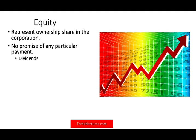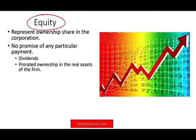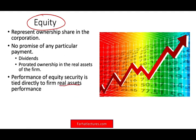Otherwise you don't get anything. You may get a dividend, but it's not guaranteed. You also have the right to vote. In case of liquidation, you have a prorated ownership in the real assets of the firm. If the company goes belly up, whatever is left is sold and distributed proportionately to shareholders — if they have a million dollars left and you own 5%, you may get 5% of that million dollars. Generally speaking, nothing is left for equity shareholders.